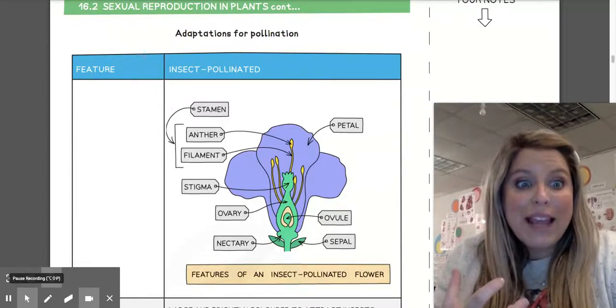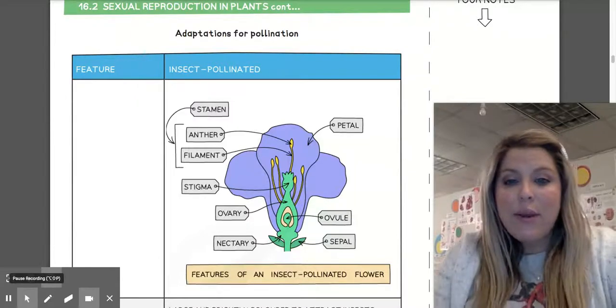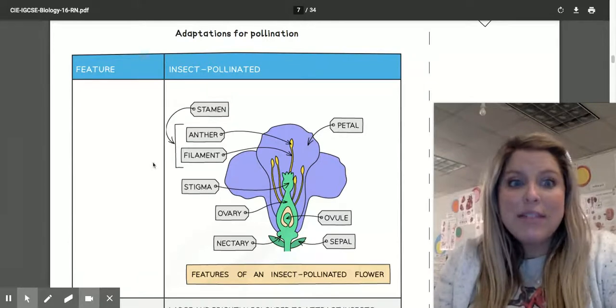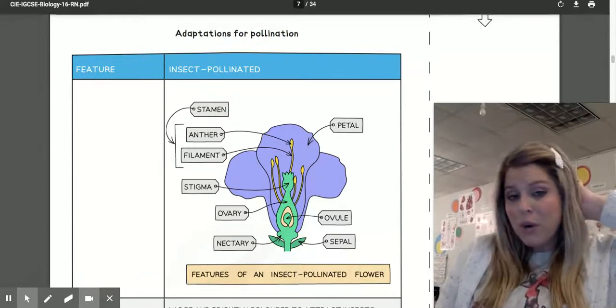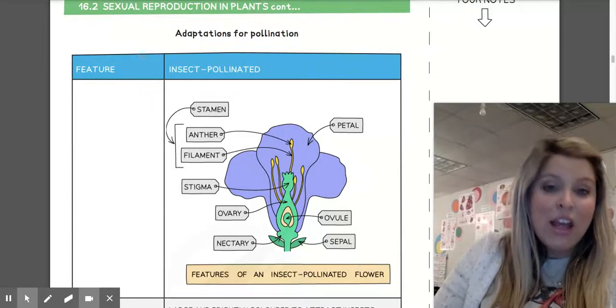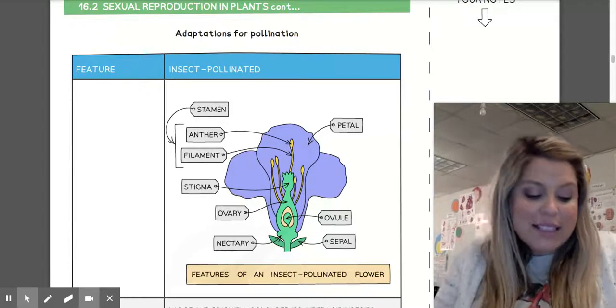So fertilization or germination can occur. Germination is the phrase that we use in plants. Okay, so insect pollinated flowers are adapted specifically for this to occur. And the adaptations would be things like with our petals - they are large and bright colored to attract insects.